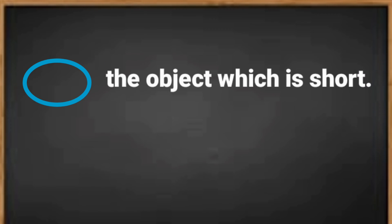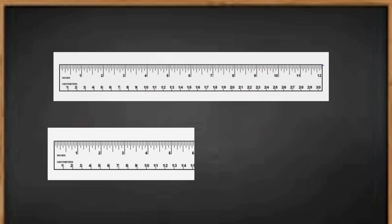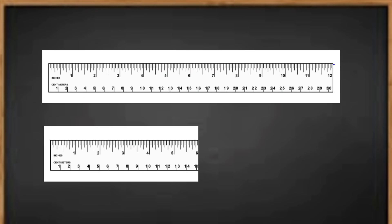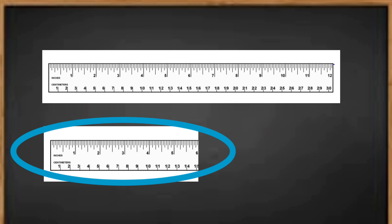Circle the object which is short. Here I have two rulers. The first ruler is long and the second ruler is short, so we will circle the second ruler which is short.